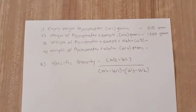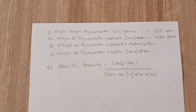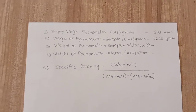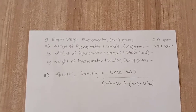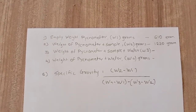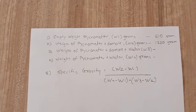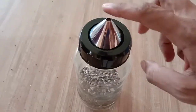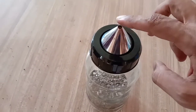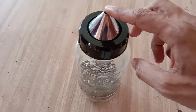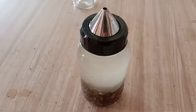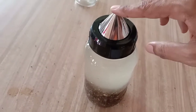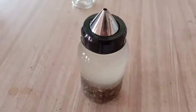The next step is to add water into the pycnometer where the sample is already present. I am going to add distilled water into the pycnometer up to its tip. This is the tip — up to this point I have to add the water. Now I have added the water up to its tip, as you can see.